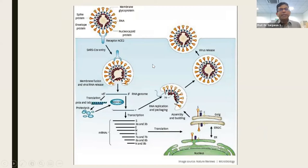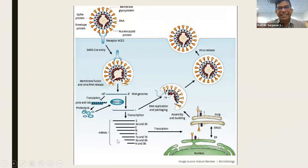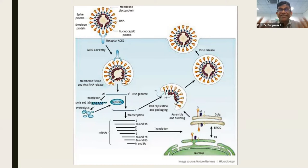Once the virus has gotten in and fused to the membrane, the viral RNA is released. There is a process of translation and replication, where the cell is now triggered to produce the very same capsules, spike proteins, and the same RNA through the endoplasmic reticulum — a paranuclear structure that manufactures the virus, which is then transmitted to the Golgi apparatus and sent back out of the cell.